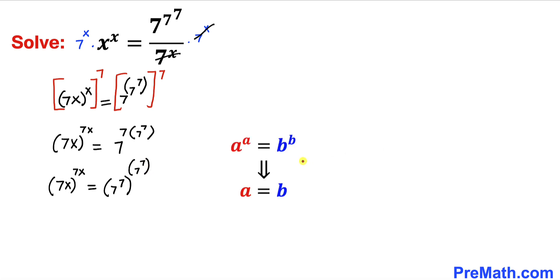Now we are going to apply this basic rule of exponents: if a^n = b^n then a = b. We can see that our base and exponent are the same on the left hand side, and likewise they are identical on the right hand side. So therefore I can write 7x = 7^7.